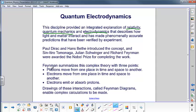Photons, again light, move from one place in time and space to another. Electrons do the same thing. Electrons emit or absorb photons. That's it. Now obviously the math is way more complex, but drawings of these interactions to help make them simple are called Feynman diagrams and they enable these complex calculations to be made.